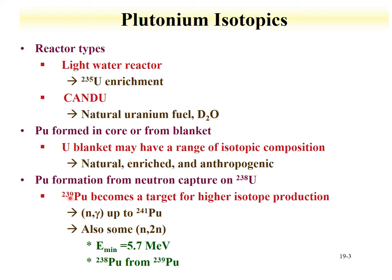Plutonium-239 can then become a target for production of higher plutonium isotopes. As plutonium-239 captures a neutron it becomes plutonium-240, which can capture a neutron to produce plutonium-241. Fast neutrons enable (n,2n) reactions, so plutonium-238 can also be produced: a fast neutron hitting plutonium-239 yields plutonium-240 with two neutrons out, giving plutonium-238. Isotopic ratios of plutonium-238, 239, 240, and 241 therefore provide information about the reactor type and the time the material spent in the reactor.